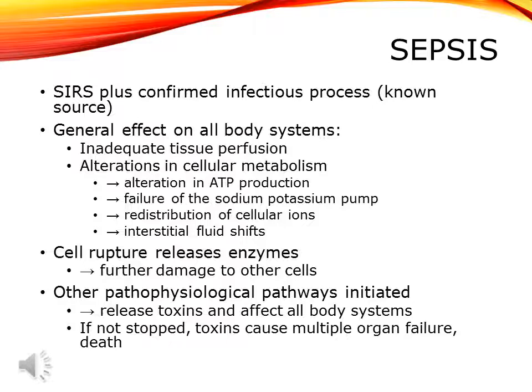To have a diagnosis of sepsis, you need systemic inflammatory response plus a confirmed infectious process or known source. Sepsis affects all body systems through inadequate tissue perfusion, which causes alterations in cellular metabolism — including altered ATP production, failure of the sodium-potassium pump, redistribution of cellular ions, and interstitial fluid shifts. When cells rupture, they release enzymes that damage other cells. Toxins released during this process can cause multiple organ failure and even death if not stopped.